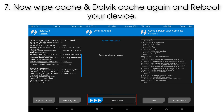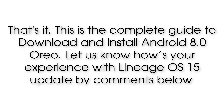Step 7: Now wipe Cache and Dalvik Cache again, and reboot your device. That's it — this is the complete guide to download and install Android 8.0 ARIA. Let us know how your experience is with Lineage OS 15 by commenting below.